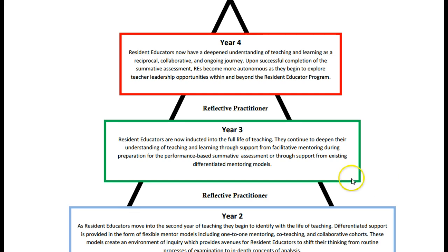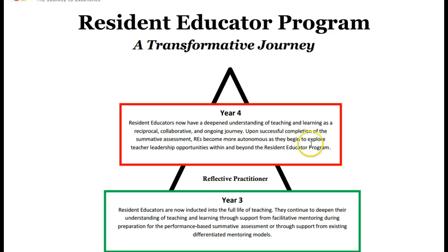But if the resident educator didn't pass the summative assessment or didn't take it at all, then it must be taken in year 4. By year 4, we would hope that with those years of experience, the educator would be working in a somewhat autonomous fashion and would be able to identify and utilize supports as needed.